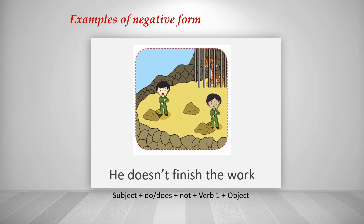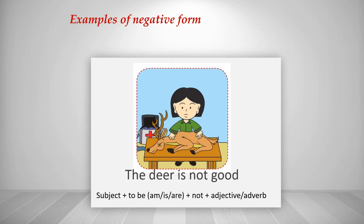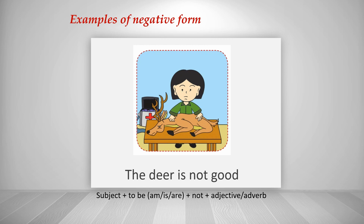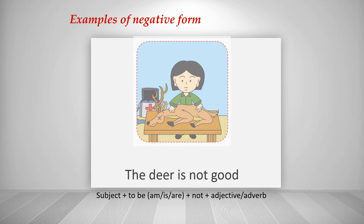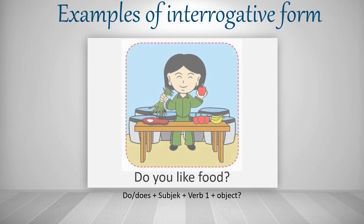Next, example of negative form: 'He doesn't finish the work' — subject + does + not + verb 1 + object. We use 'doesn't' because the subject is third person singular. Another example: 'The deer is not good' — subject + to-be (is) + not + adjective.